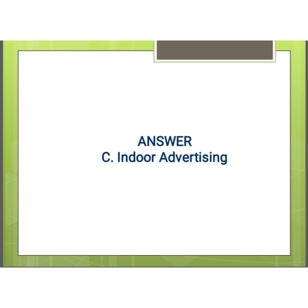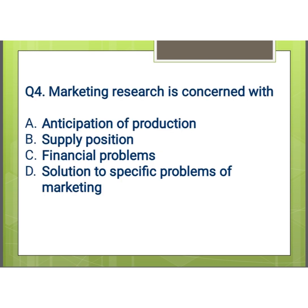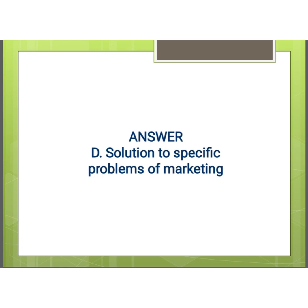Our next question is: marketing research is concerned with what? Options are: A) anticipation of production, B) supply position, C) financial problems, and D) solution to specific problems of marketing. And our answer is D, that is solution to specific problems of marketing.